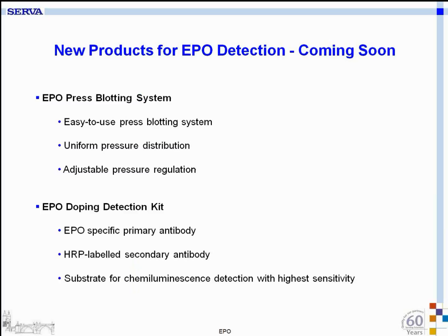Additional new products for EPO detection include the EPO press blotting system — an easy-to-use press blotting system with uniform pressure distribution over the entire surface and adjustable pressure regulation by different weights. Also available is an EPO doping detection kit containing a specific primary antibody, a horseradish peroxidase-labeled secondary antibody, and a substrate for chemiluminescent detection with the highest sensitivity.